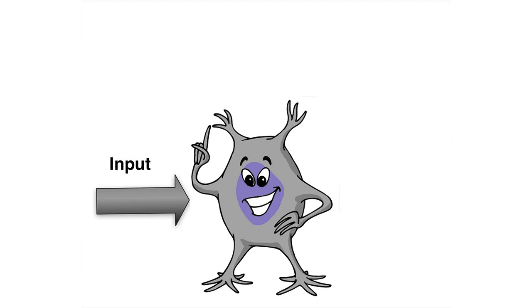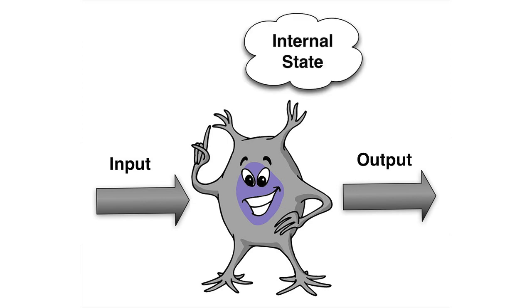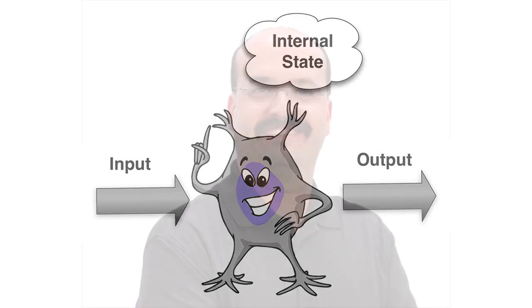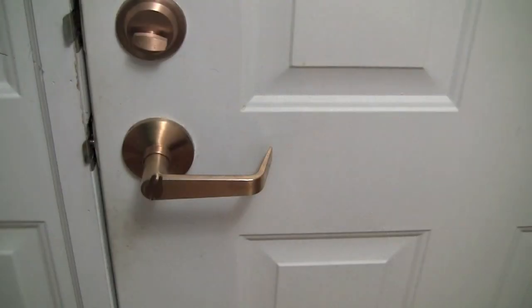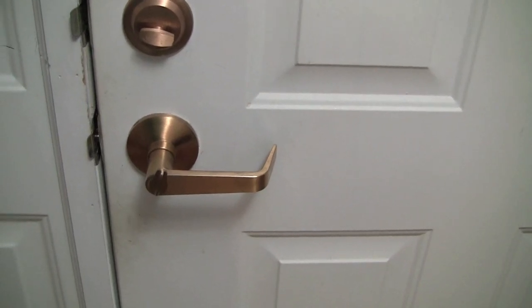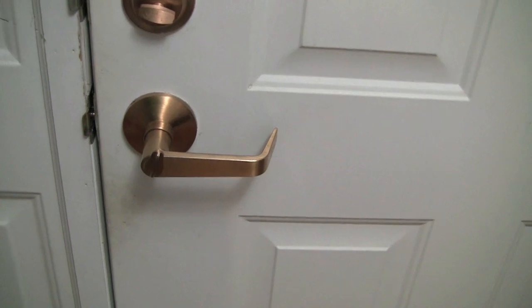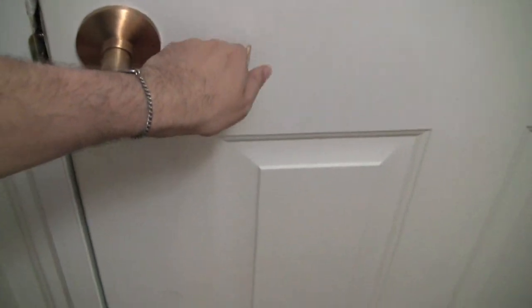AI receives input. Based on that input, AI produces output. AI also maintains an internal state. We are the same way — I'm a card-carrying human. I receive input, I have long-term memory that tells me where to go, most of the time anyway. Based on that input, I do something. That's output.